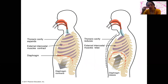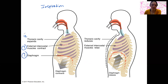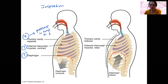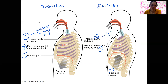Summary: During inspiration — step one, the muscles contract. Step two, that causes the thoracic cavity to expand. Step three, that causes pressure — both intrapleural and intrapulmonary — to decrease, which allows air to flow into the lungs. For expiration: step one, those muscles relax. Step two, that reduces the volume of the thoracic cavity. Step three, that's going to increase pressure and cause air to flow out.